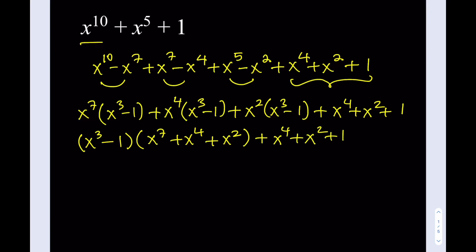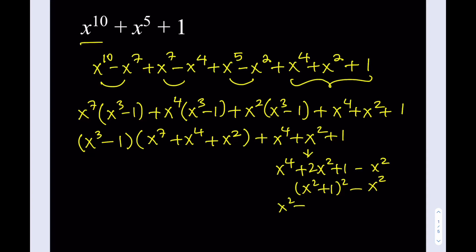Now we know x cubed minus 1 is factorable, but let's first work on x to the 4th plus x squared plus 1. We add x squared and subtract x squared to get a difference of two squares, and this factors as (x squared plus x plus 1)(x squared minus x plus 1). So this quartic polynomial can be factored like that.